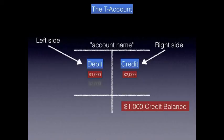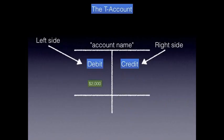Let's flip this. What if our debits totaled $2,000 for whatever account this would be, and our credits totaled $1,000? Can you think of what our balance would be? Our balance would be a debit balance of $1,000, because our debits exceed our credits.